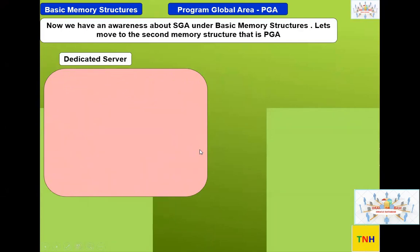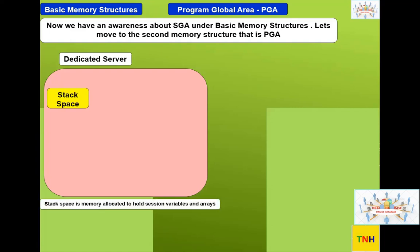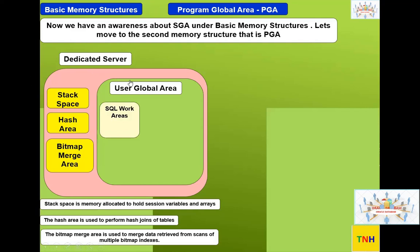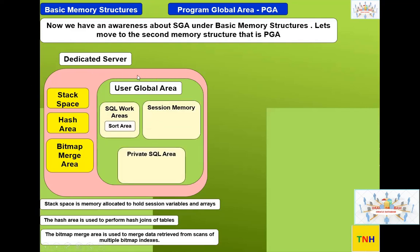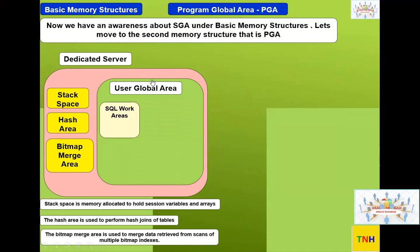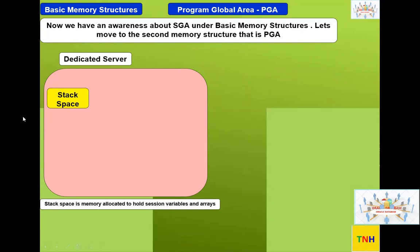So let's continue. Looking at PGA on dedicated server: these are the contents of a PGA. The pink-colored box represents the entire program global area. There are main three components which do not change whether it's dedicated or shared — those remain constant inside PGA. But there are components that will change. The first component is stack space.